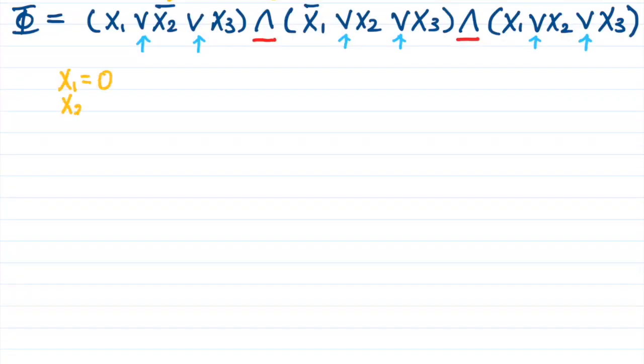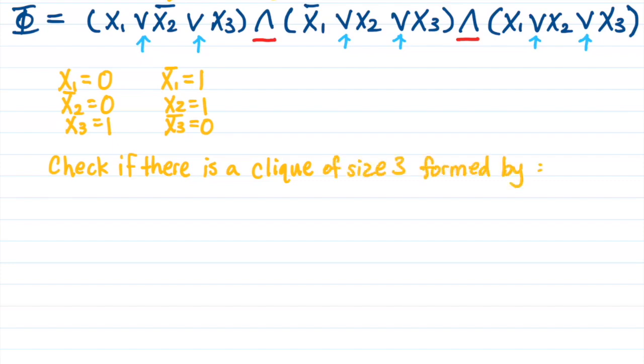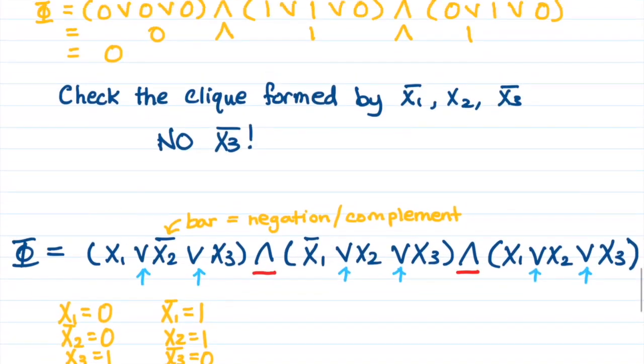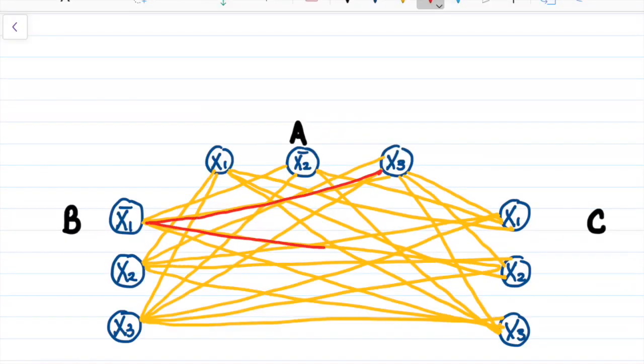Now, we can also check another case where the formula does give a 1. We can make x1 equal 0, x2 bar equal 0, and x3 equal 1. Since x1 is 0, then x1 bar is 1. Similarly, since x2 bar is 0, then x2 is 1. The question becomes, is there a clique of size 3 formed by x1 bar, x2, and x3? The answer is yes, and it is highlighted on the graph.